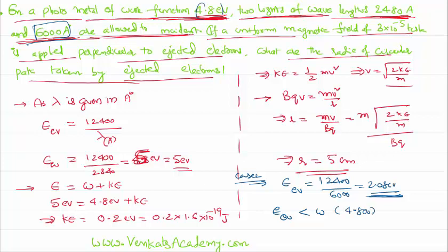So there is no emission of photoelectrons itself in this case, so no question of taking a circular path at all. Only in the first case there is a circular path of radius 5 centimeters, but not in the second case. Thank you for watching, keep coming back for more video lessons.